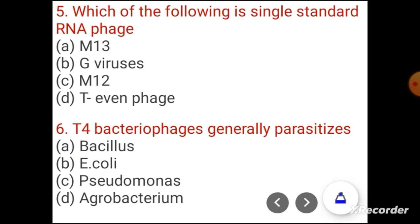Question 5. Which of the following is a single-stranded RNA phage? Options: M13, G-viruses, M12, or T-even phage. The correct answer is M12.